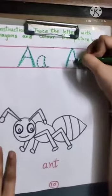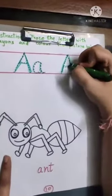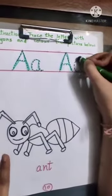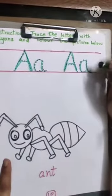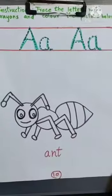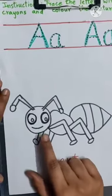Slanting line, slanting line, sleeping line. Then a C pattern and a slightly curvy line. Now we have to color this ant.